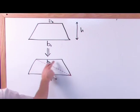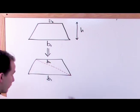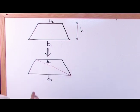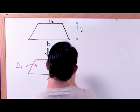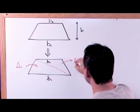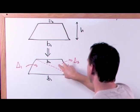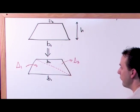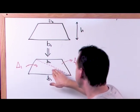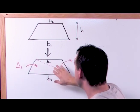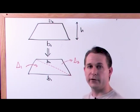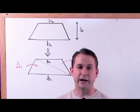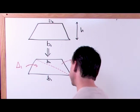When we cut along the diagonal, we form two separate triangles — triangle one and triangle two. So if we want to find the area of this trapezoid, all we need to do is find the area of triangle one and the area of triangle two, then add those two things together to get the total area of the trapezoid.